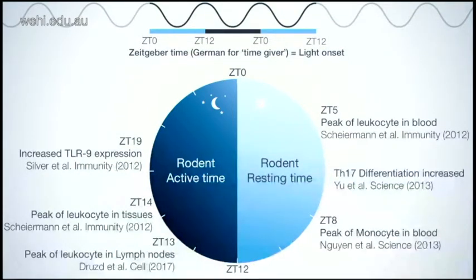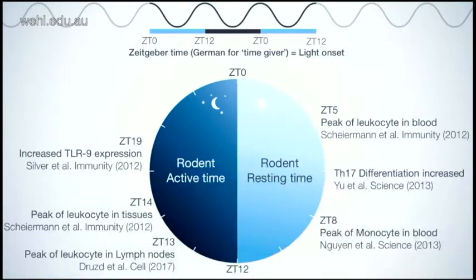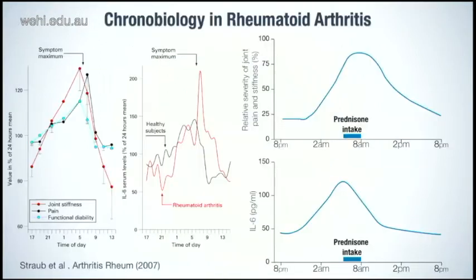The main idea from these studies is that during the resting phase, leukocytes and immune cells are more present in the blood circulation, so they can migrate to the tissue when you are in your active phase and be ready for infection. It's also very interesting when you look at circadian rhythm in the context of rheumatoid arthritis — the symptoms are not constant; they also follow a rhythmic pattern, and people suffering from rheumatoid arthritis have more severe symptoms early in the morning.